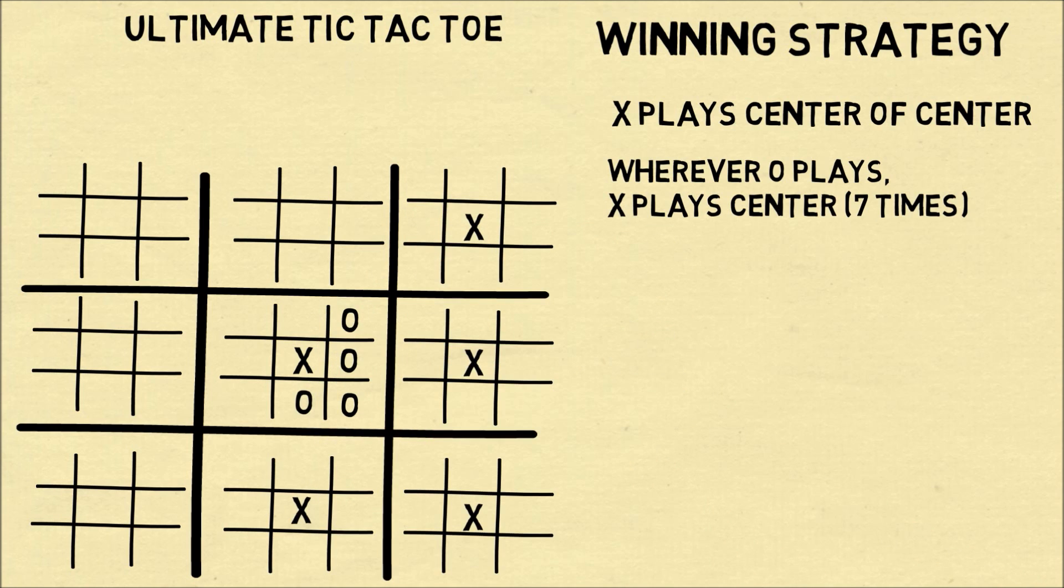What X is doing here is giving up the center square of the large 3x3 grid, but in return, capturing the center squares of most of the smaller 3x3 grids.